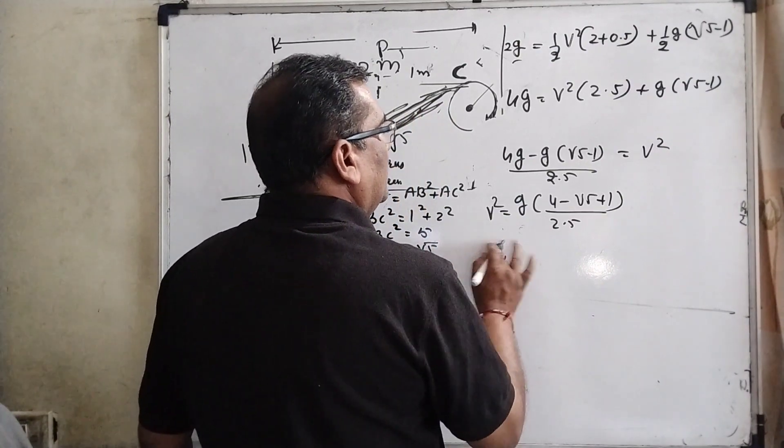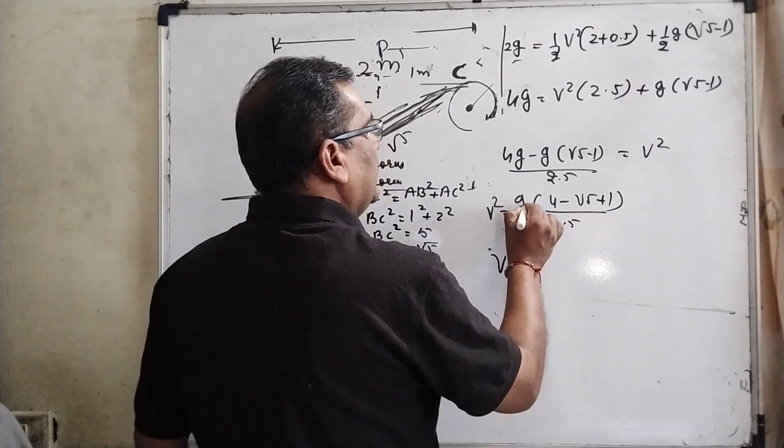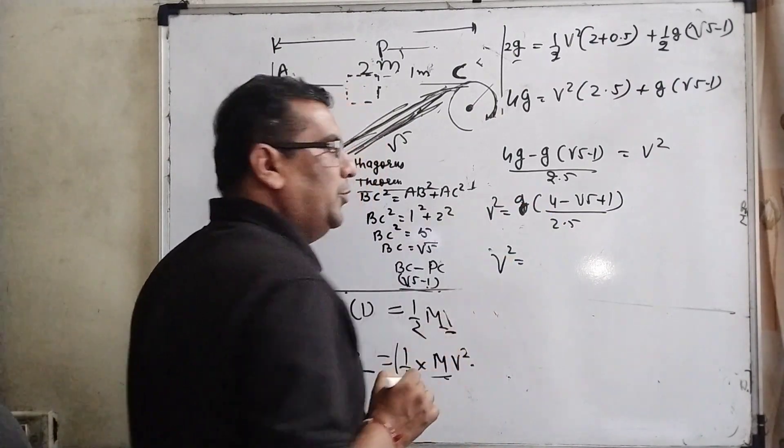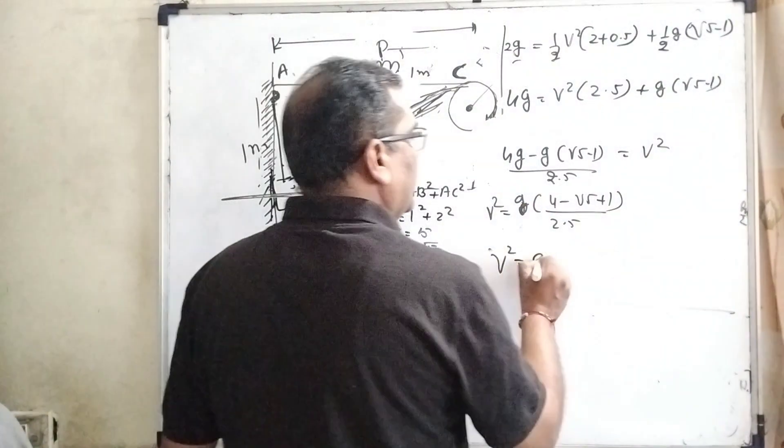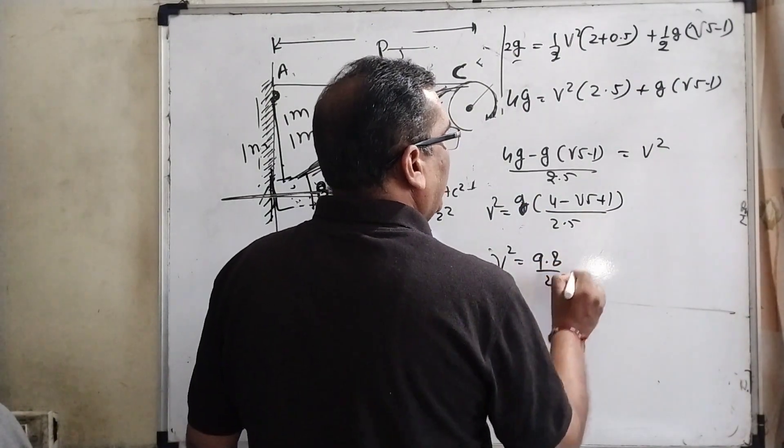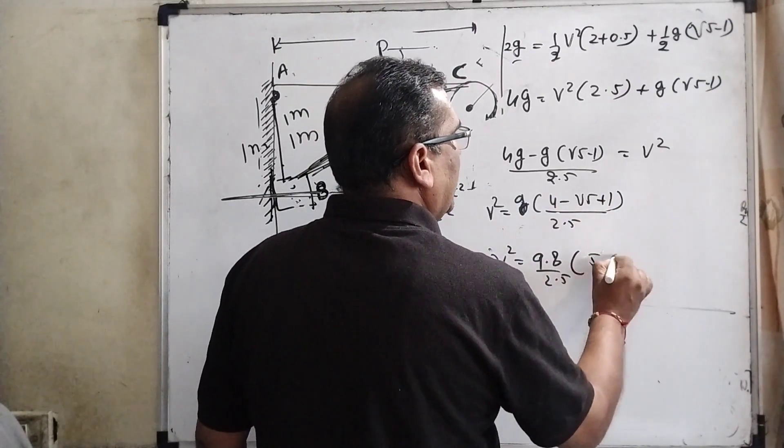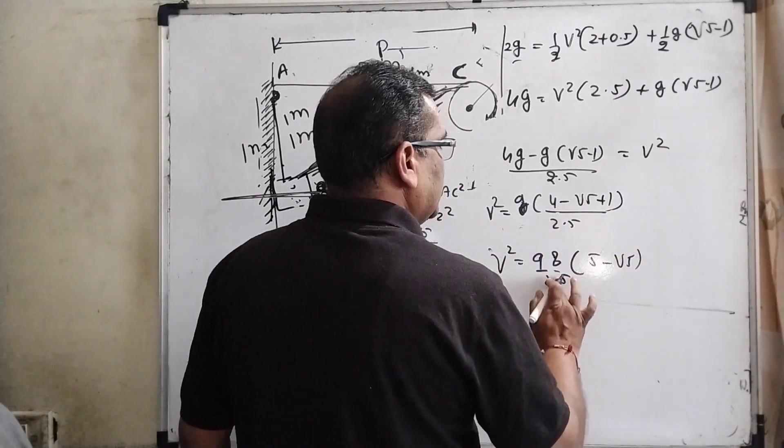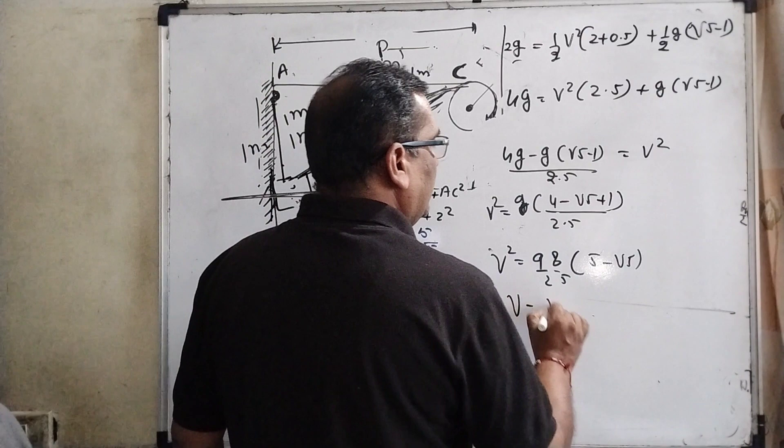So here we have given the instructions that g put 9.8, so we have put here 9.8 divided by 2.5 times 4 and 5 minus root 5. Decimal cancel out, and v equals root.